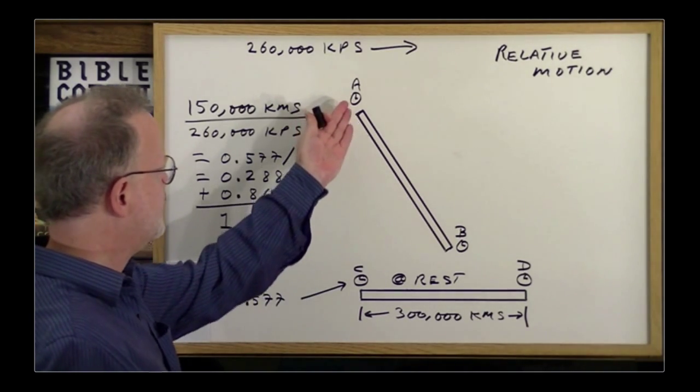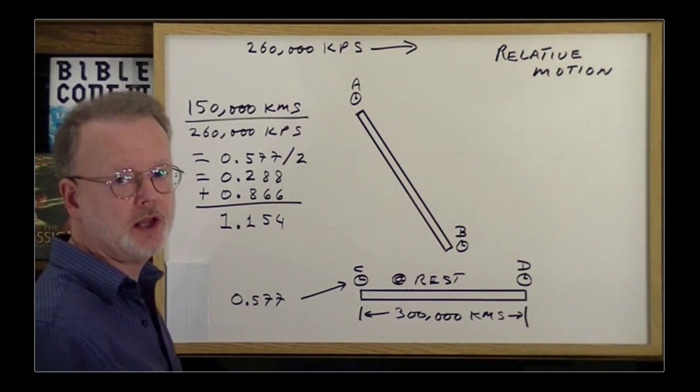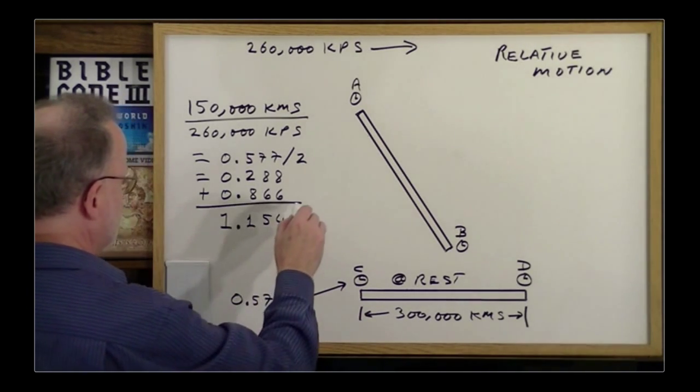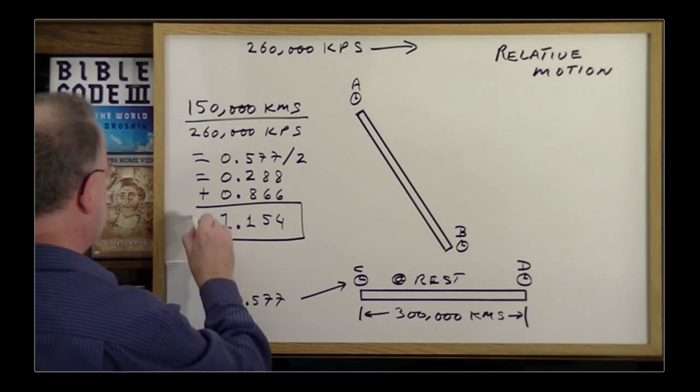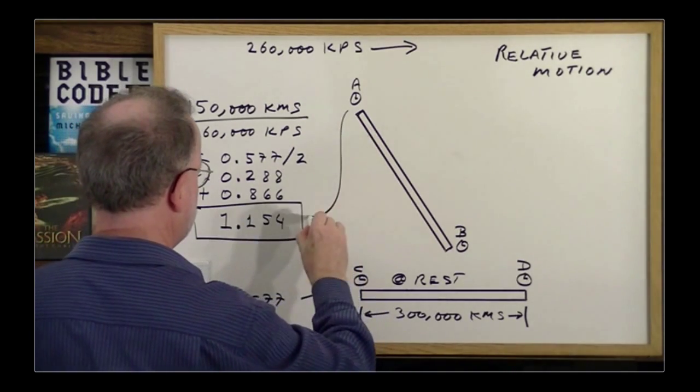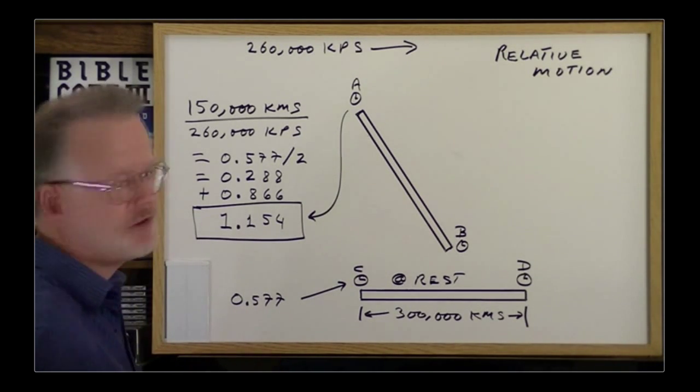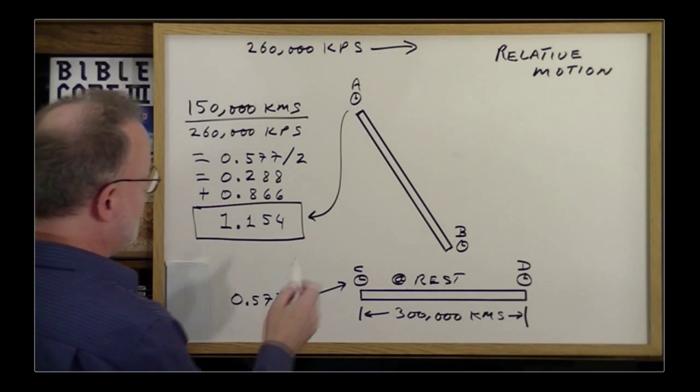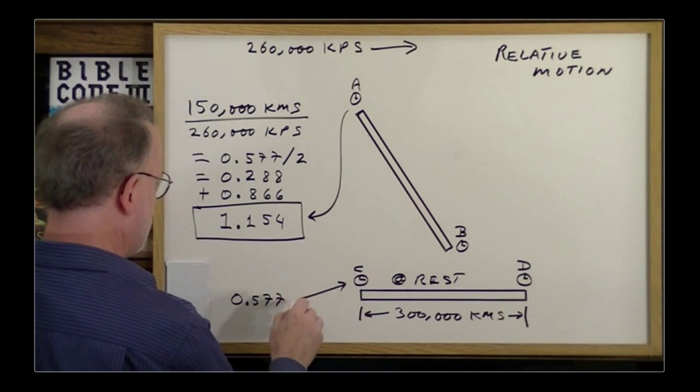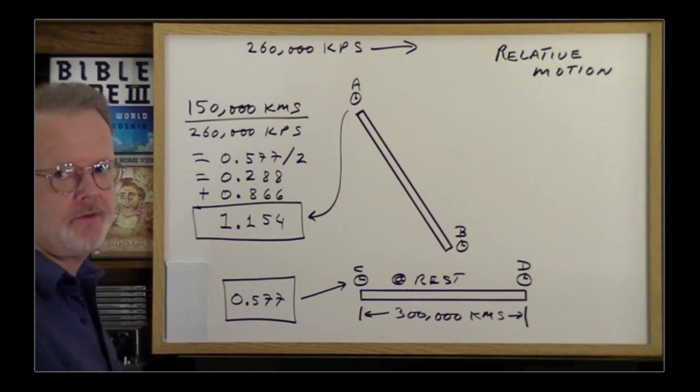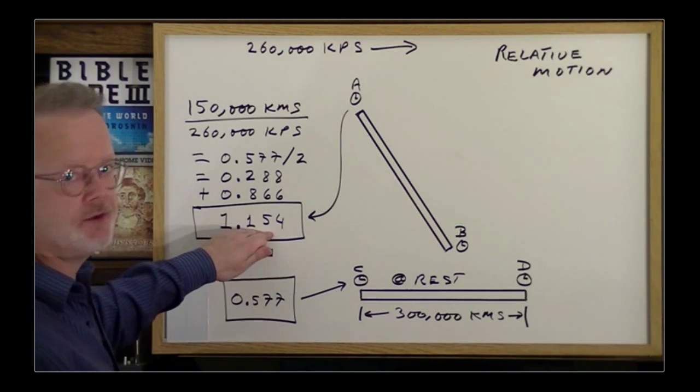Then he asked Mr. A, what time did your clock say when you lined up with Mr. C? And he says, my clock said 1.154 seconds after 12 o'clock noon. However, he was very surprised to find that clock C indicated 0.577, which is one half of this.